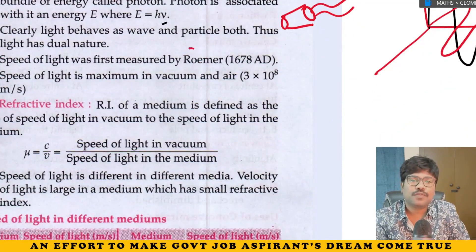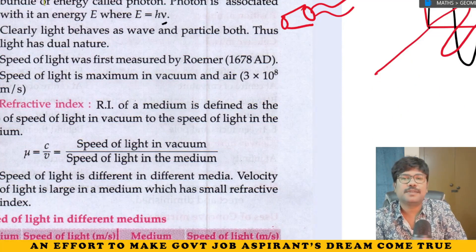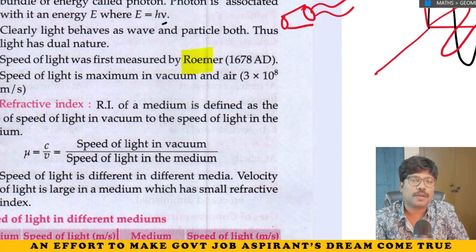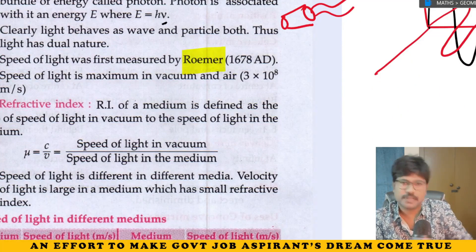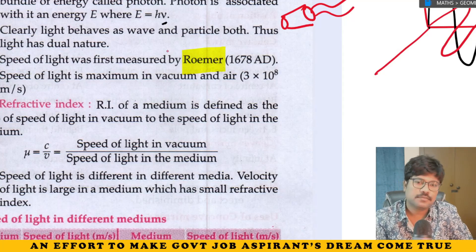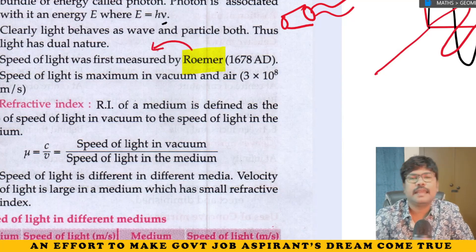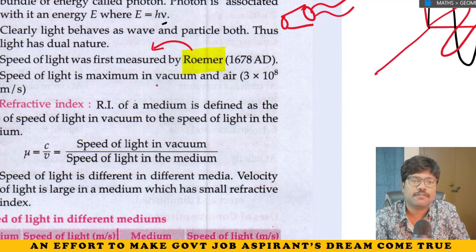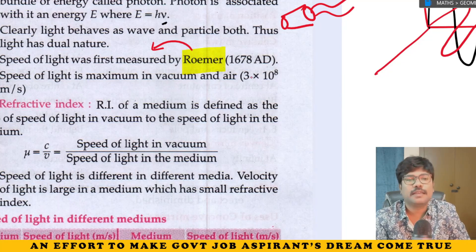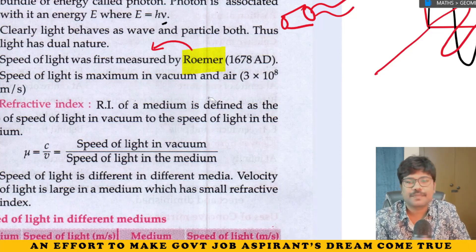Speed of light — this is very important. It was first measured by Rømer. Light has the highest speed. In vacuum and in air, the maximum speed of light is 3 × 10⁸ meters per second.